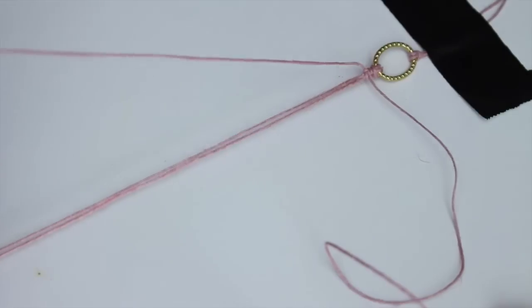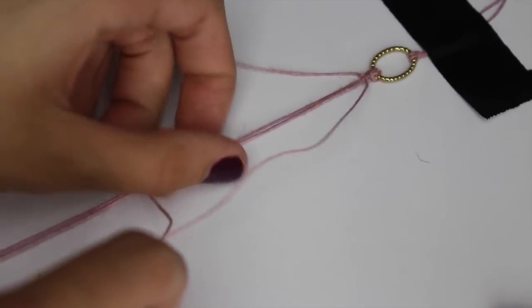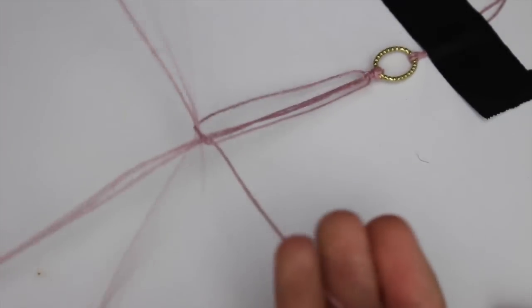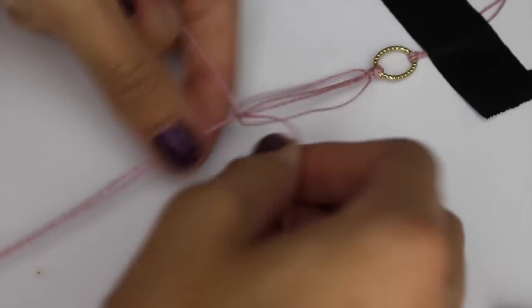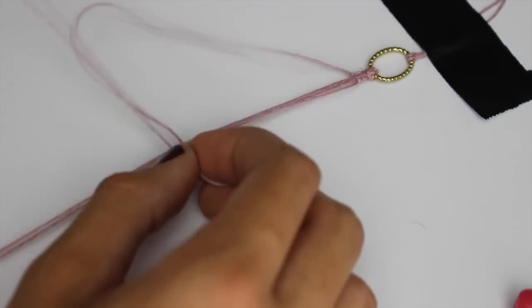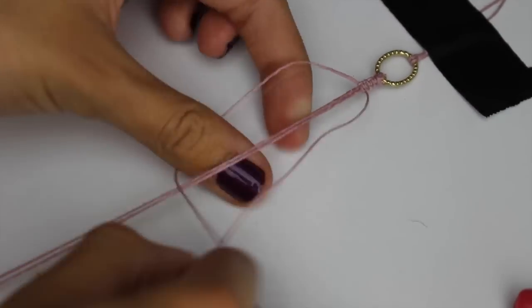Then do the same exact thing but on the other side. So you're going to create a four shape with the other side and loop it over the hemp twine, underneath the two in the middle, and then back up and through the one on the other side, and then pull it tight.